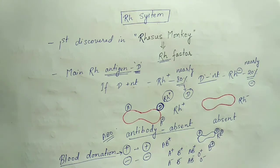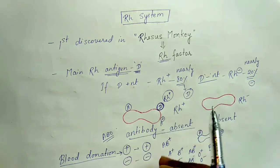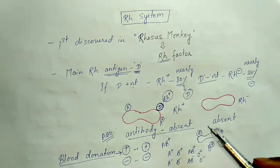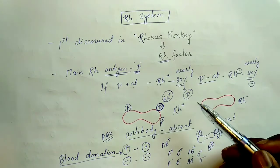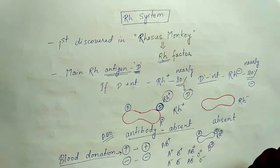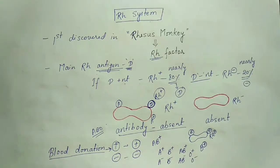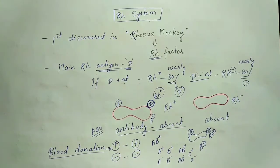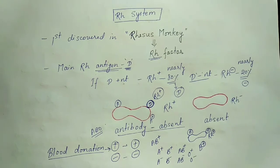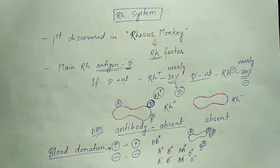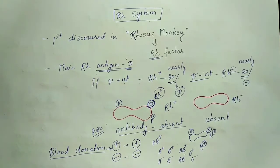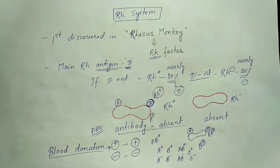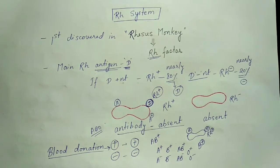This was all about our blood group systems. We studied two groups: ABO and Rh. In the next video we will see about blood clotting. If you like this video please share and subscribe, and I will make more videos. Thank you.